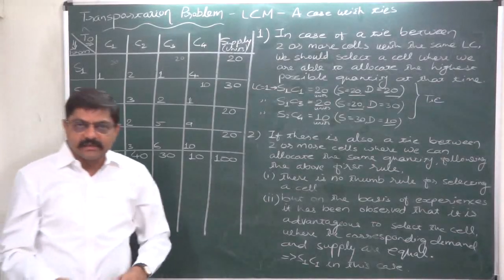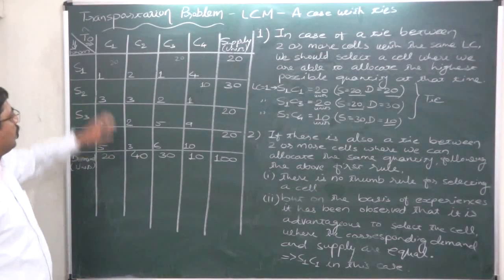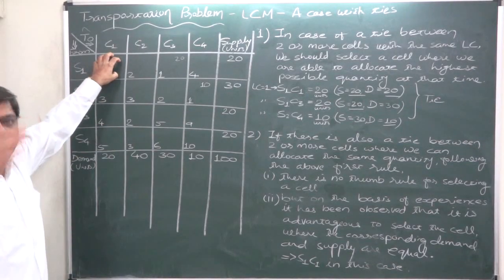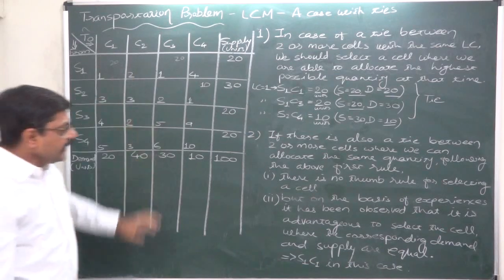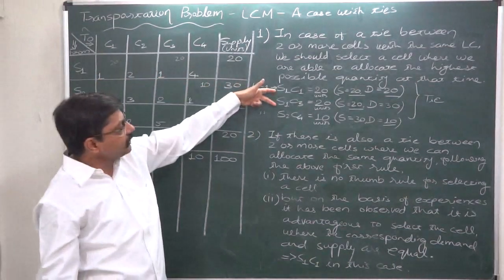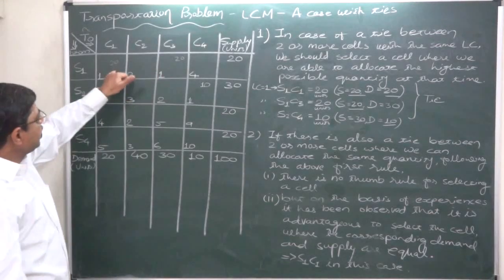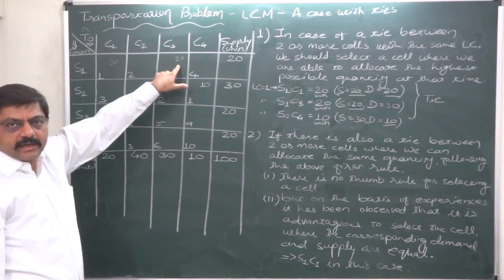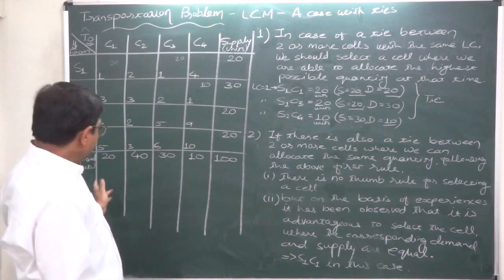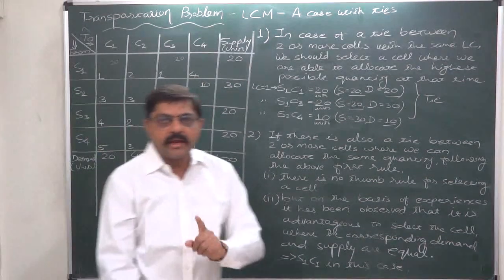When both supply is exhausted and demand is satisfied simultaneously, we give that cell more weight. So in case of a tie between two cells — after first breaking the tie based on allocatable quantity, and that too results in a tie — we should prefer the cell where demand and supply are equal. Note that this does not happen every time and is not always possible, but it is the recommended guideline.